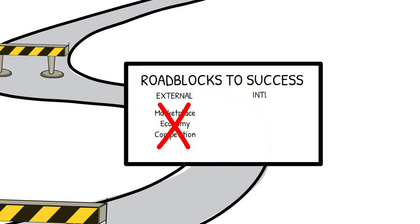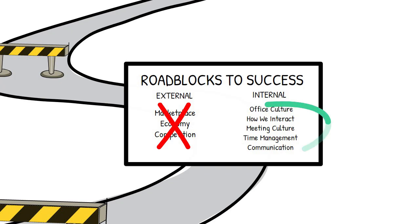In our experience, the biggest roadblocks to success are almost always the internal ones: the culture inside our company, the way we interact, communicate, meet, prioritize time, and the way decisions get made. The biggest roadblocks to success are self-imposed.